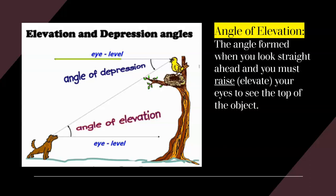So in this diagram, we have a dog on the ground hearing a bird chirp up in a tree. When that dog looks straight at the tree and then looks up at the bird, that angle formed is the angle of elevation. It's important to recognize that the angle of elevation is formed with the eye level looking straight across, not necessarily at the ground.